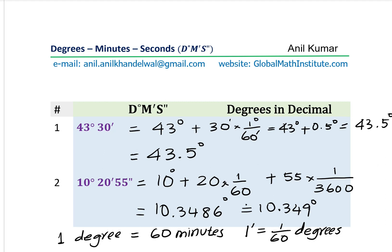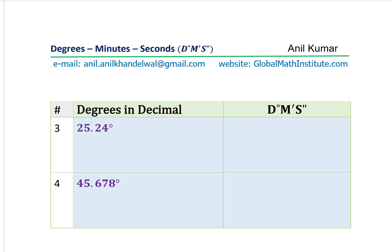Now let's take the next examples where we convert from degrees in decimals to degrees, minutes and seconds. We have 25.24 degrees and 45.678 degrees to convert. I'd like you to pause the video, answer the question, and then check with my solution.